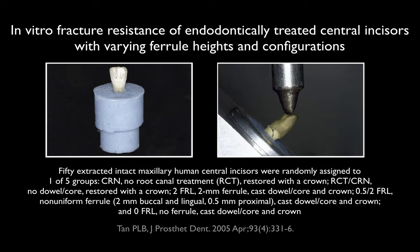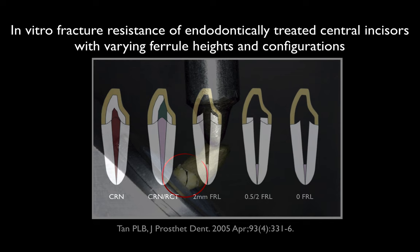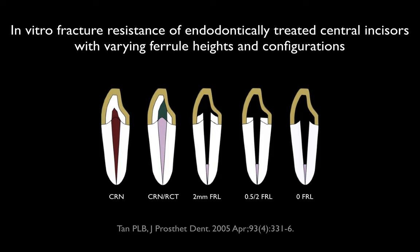There have been a number of studies that replicated this, and I picked TAN because I happen to like it. TAN took 50 extracted central incisors and randomly assigned them to five groups, then off-axis loaded them until failure occurred — just the fracture of the tooth. The first group, he prepared a tooth for a crown and placed a crown on it. The second group, he prepared the tooth for a crown, created an endo-axis, did an endo, and placed a crown.